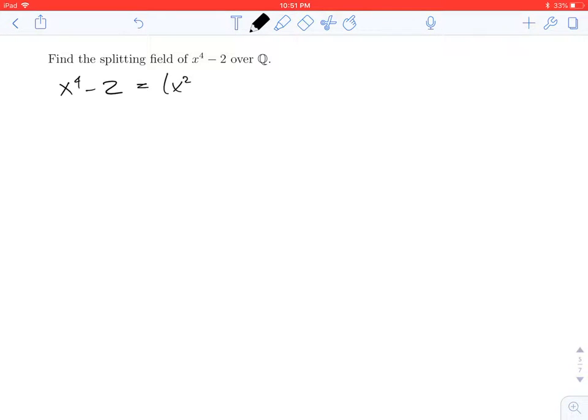So I can factor this as x squared, because x to the fourth, that's x squared squared. So, x squared minus the square root of 2 times x squared plus the square root of 2.